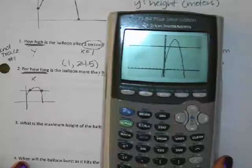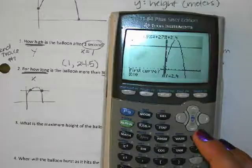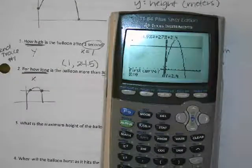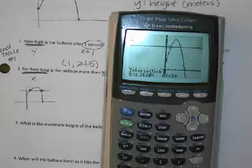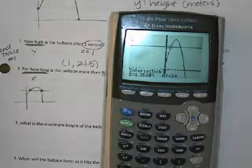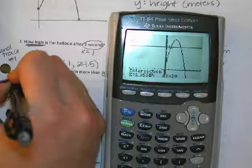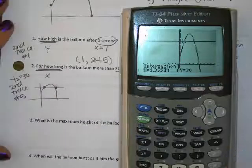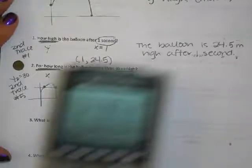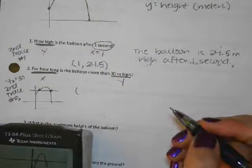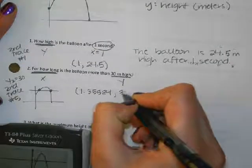What in the picture are we looking for? The intersection. So we do second trace, number 5. You don't have to get your cursor right on top of the intersection — you just have to be closer to one intersection than the other. So I'll press enter, enter, enter, and it will find the left intersection. I'm writing y2 equals 30 in my notes — make sure your notes are thorough.